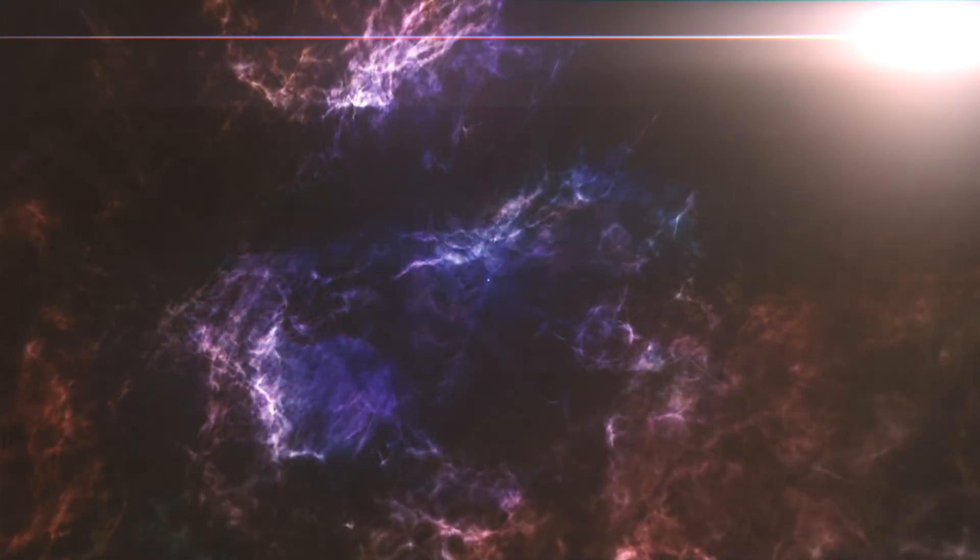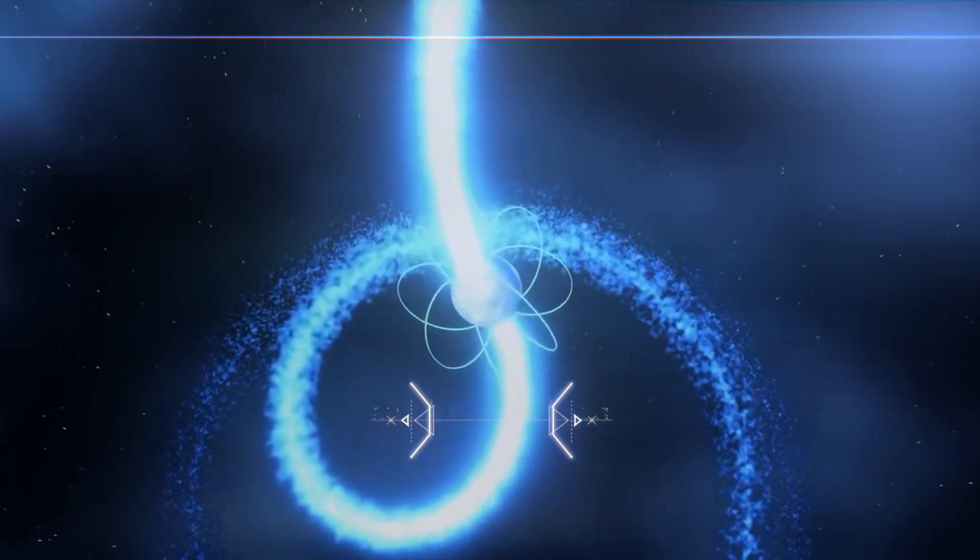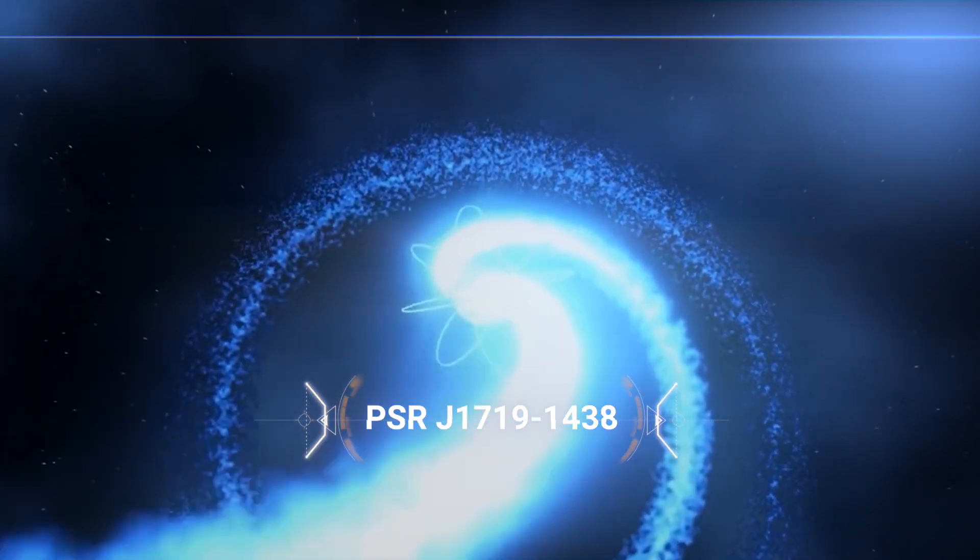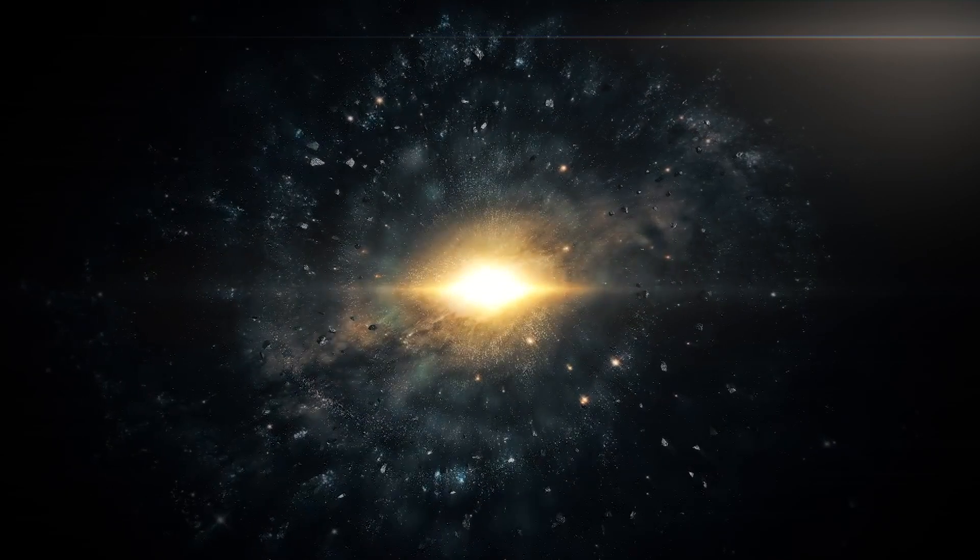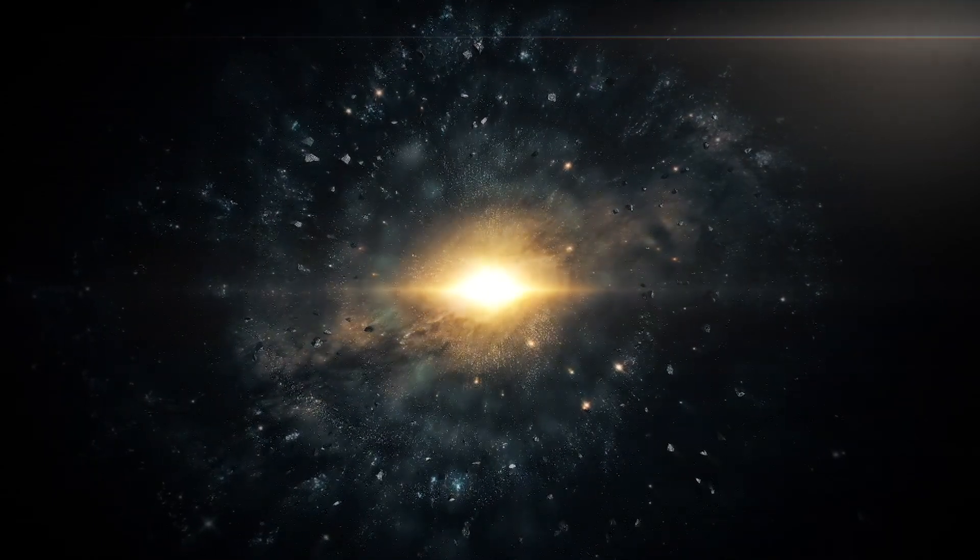We now travel to another, even more alien location. The stellar remnant PSRJ 1719-1438 is located almost 4,000 light-years away. It is a pulsar, a type of rapidly rotating neutron star, formed during the violent death of a massive star during a supernova explosion.